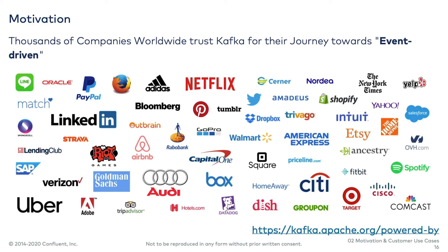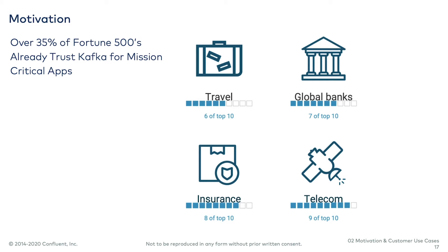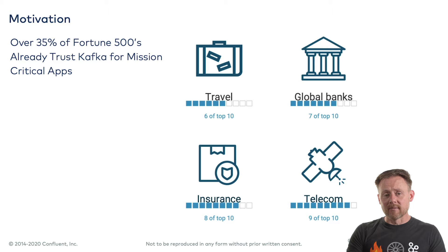And it's not just me saying this. Many of the largest companies in the world — with some of the most complex information processing requirements and, in some cases, the longest history of legacy systems stretching back decades — are all on this same event-driven journey. You see some of the logos here on this page: a mix of traditional companies like airlines and banks, first-generation internet companies like LinkedIn and Netflix, and more recent entrants like Uber and Lyft. These are all heavy users of Kafka. As of the time of this recording, 35% of the Fortune 500 use Kafka for mission-critical applications.